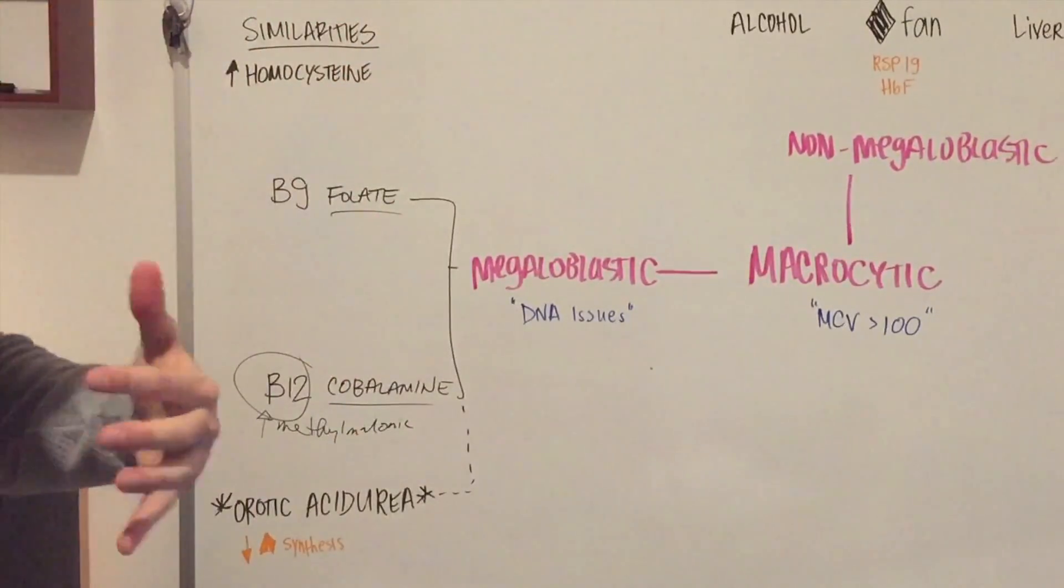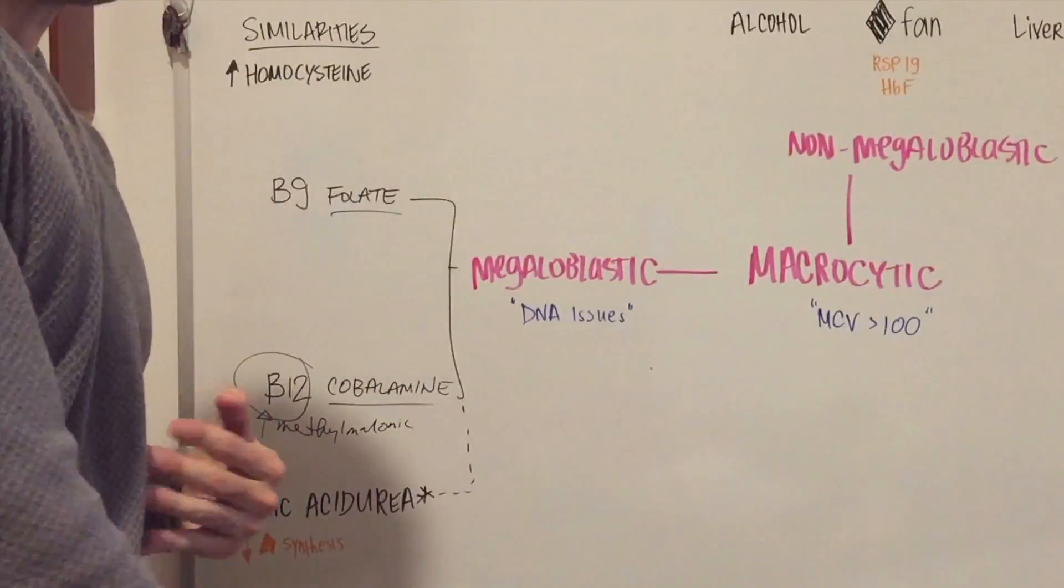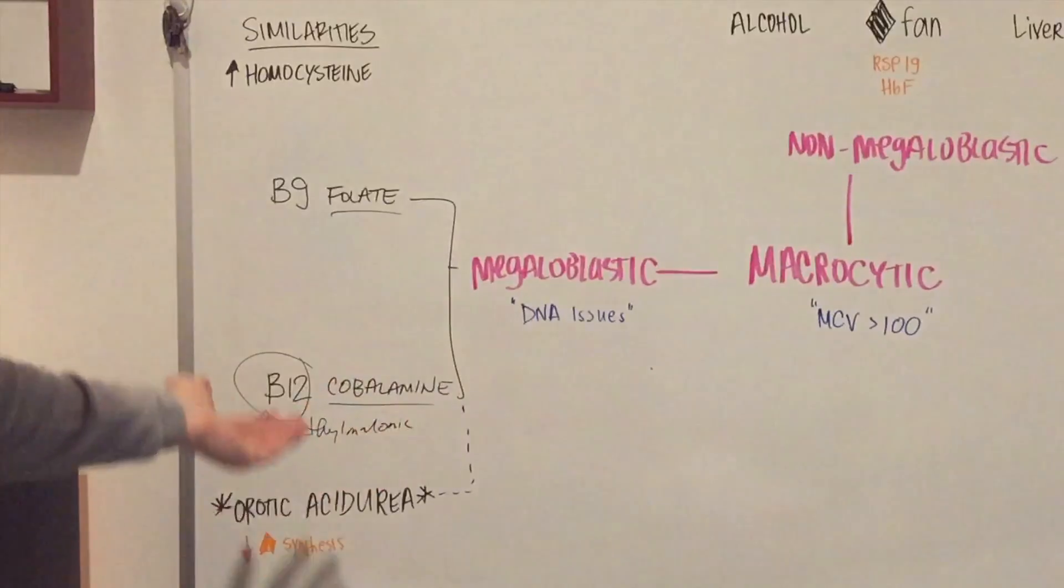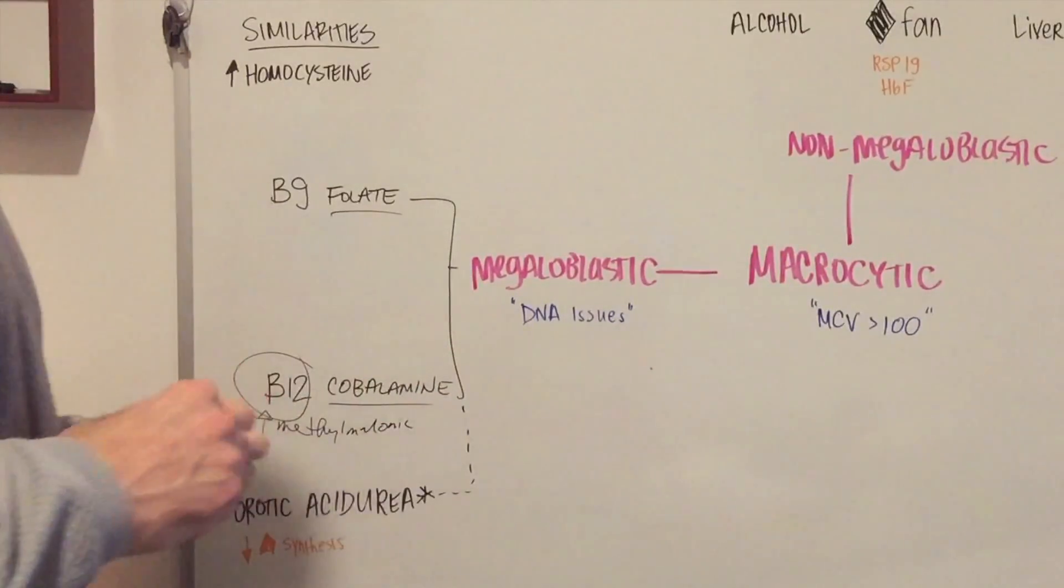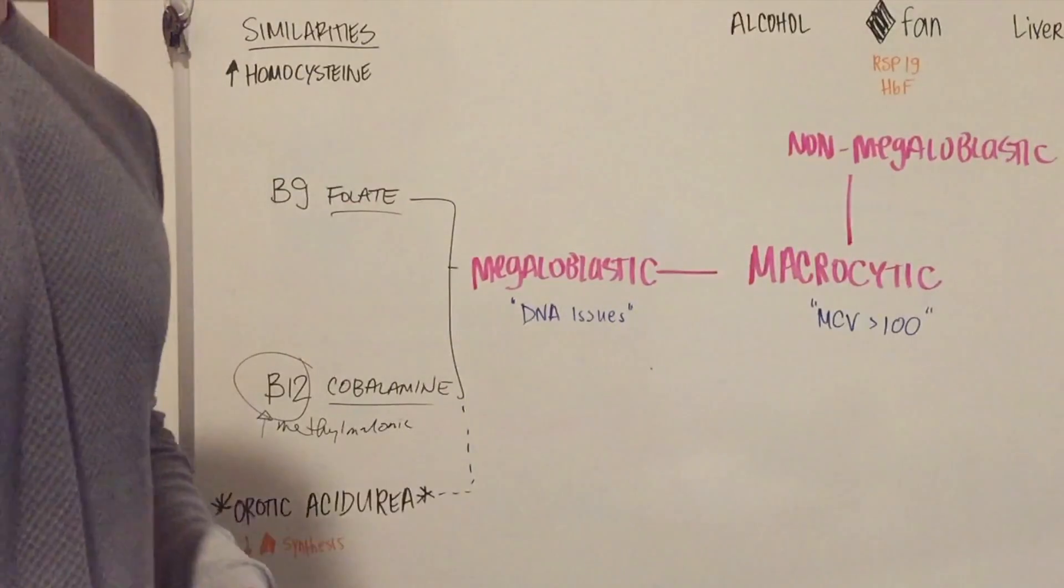...stuff like this. And the pancreas is actually going to release enzymes that are going to break down intrinsic factor, and that's going to help B12 get absorbed. So there's different conditions that can cause this.